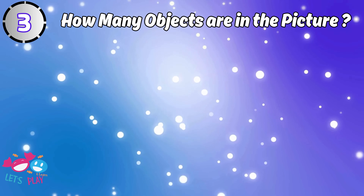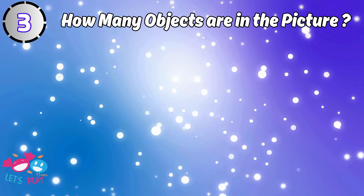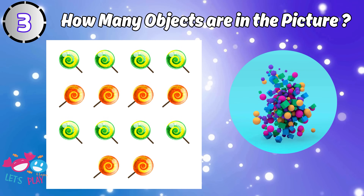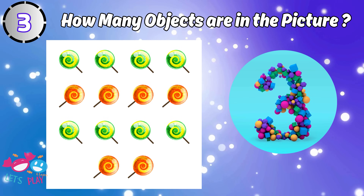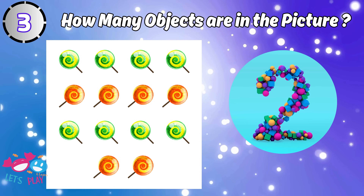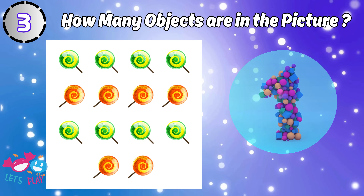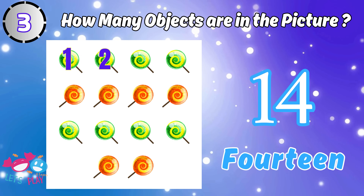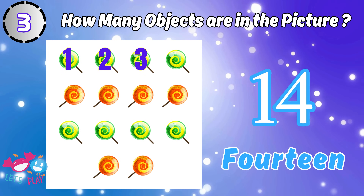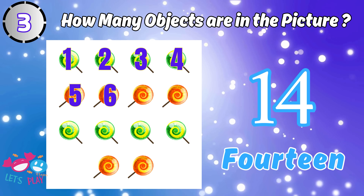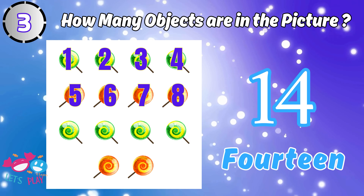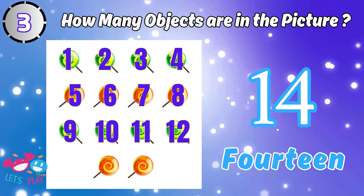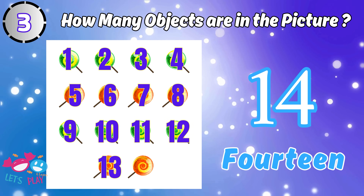How many objects are in the picture? Fourteen. One, two, three, four, five, six, seven, eight, nine, ten, eleven, twelve, thirteen, fourteen.